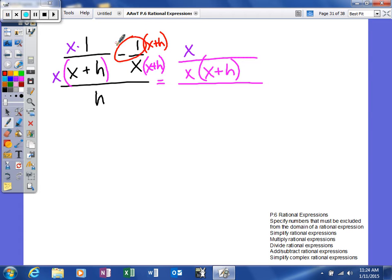However, distribute the negative sign along with your 1, and it will give you negative x minus h. If you notice, in our denominator, we just have one term, so it's going to remain that. And what I'm going to do is I'm going to simplify my numerator, put those like terms together. So I get something that looks like this.